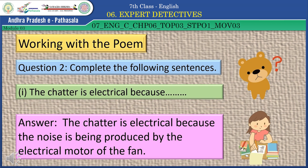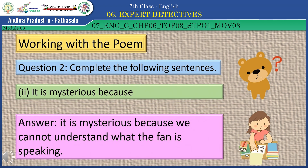Question 2: Complete the following sentences. Number 1: The chatter is electrical because — the correct answer is: the noise is being produced by the electrical motor of the fan. Number 2: It is mysterious because — the correct answer is: what the fan is speaking cannot be understood.